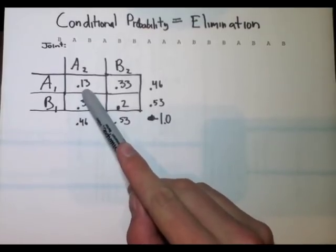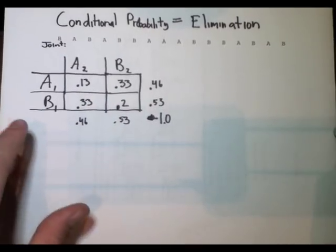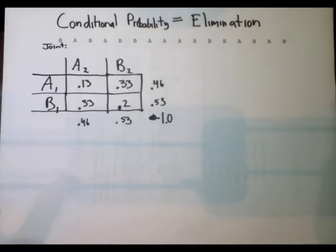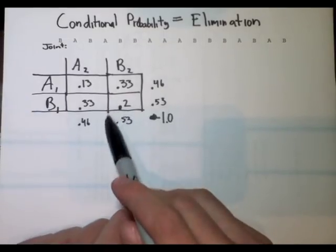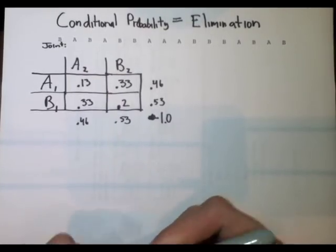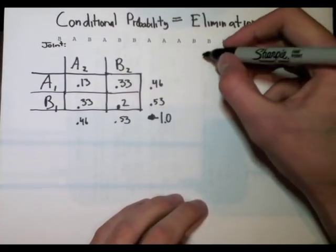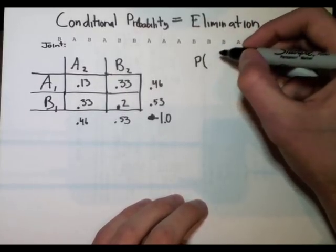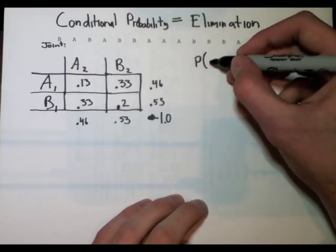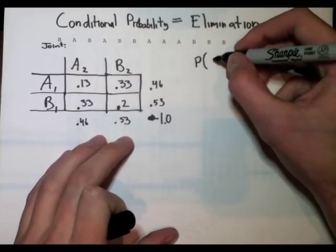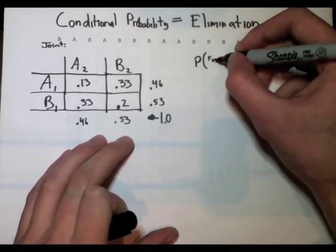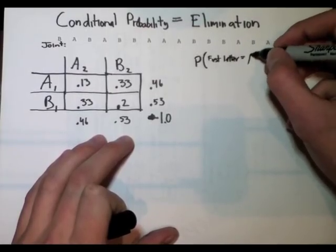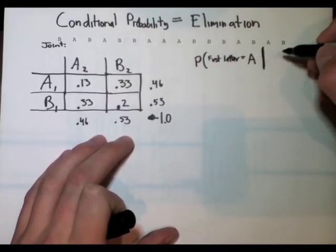Like if you say, given that the first letter is an A, what's the probability that the second letter is an A? Or given that the first letter is a B, what's the probability that the second letter is an A? So whenever you hear that, what you want to do is you want to look at your contingency table and say, what can I eliminate? So let's do a couple samples here. Let's say we're being told to calculate the probability of, we'll say the probability that the first letter equals A given that the second letter is B.